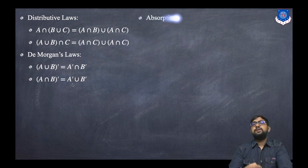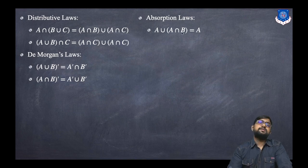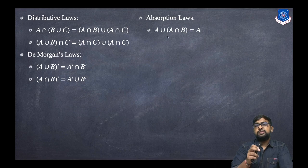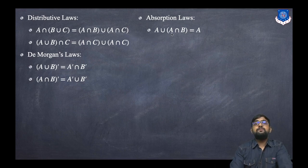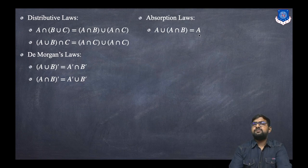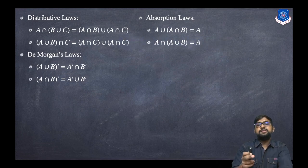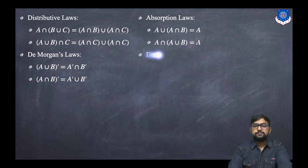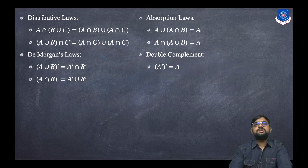The absorption law: A ∪ (A ∩ B) = A — A absorbs A ∩ B. Similarly, A ∩ (A ∪ B) = A — A absorbs A ∪ B. The double complement law: (A')' = A, as the name suggests.